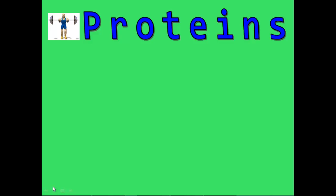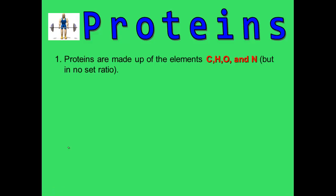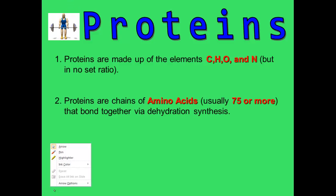Hi everyone, and today we're going to be talking all about proteins. Proteins are just like carbohydrates and fats, made up of carbons, hydrogens, and oxygens. The only difference is proteins have the addition of nitrogen, and sometimes they also have the addition of sulfur.